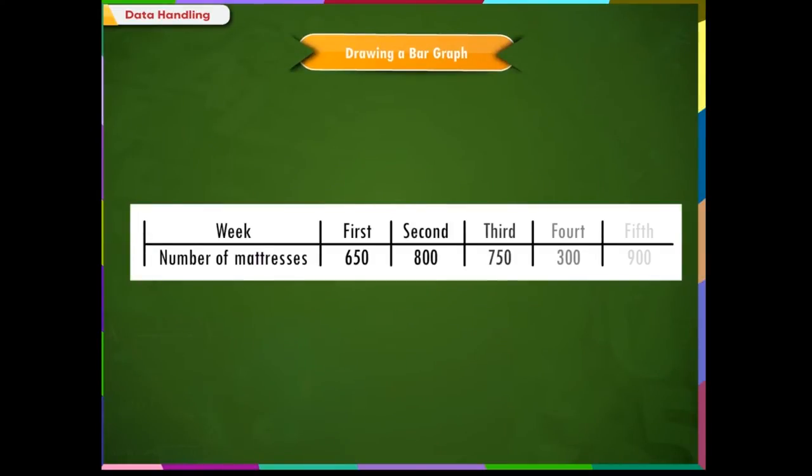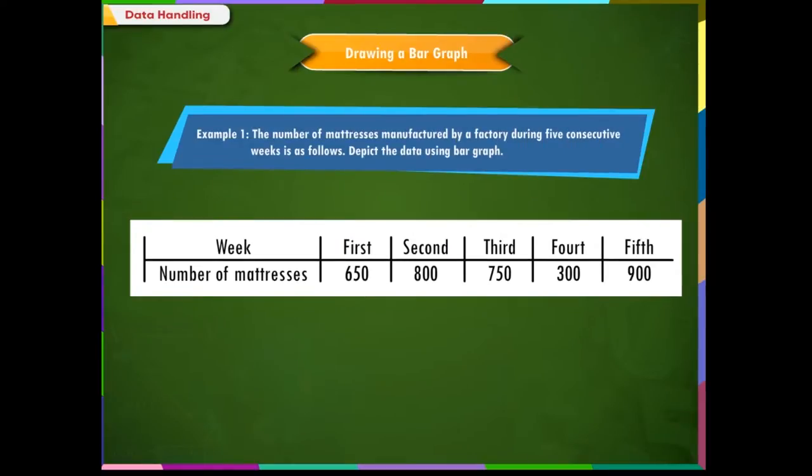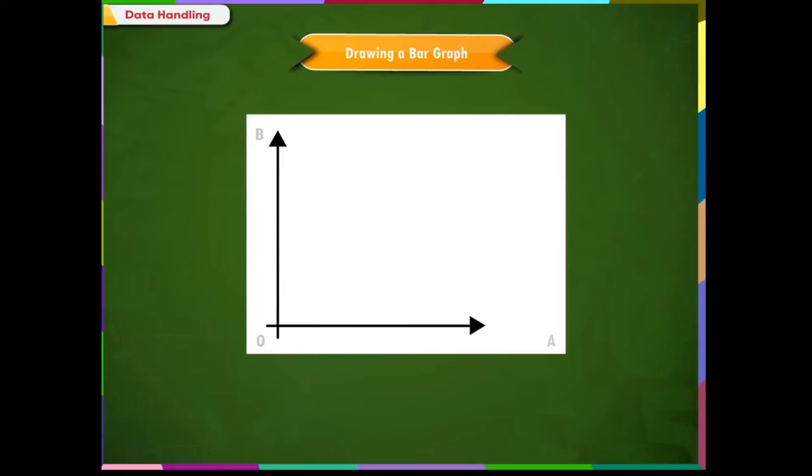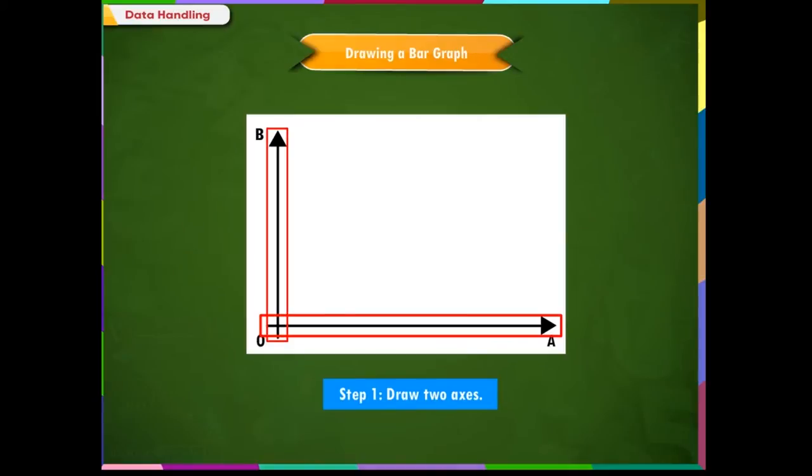Let us now understand how to draw a bar graph with this example. The number of mattresses manufactured by a factory during 5 consecutive weeks is as follows. Depict the data using bar graph. We can draw the bar graph on a graph paper. The first step is to draw horizontal and vertical lines and name them as OA and OB.